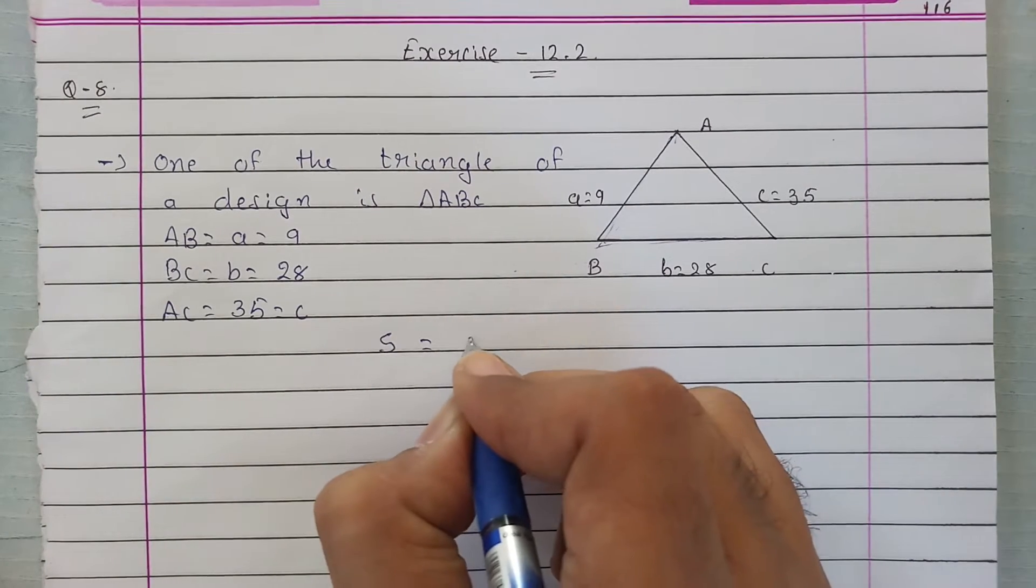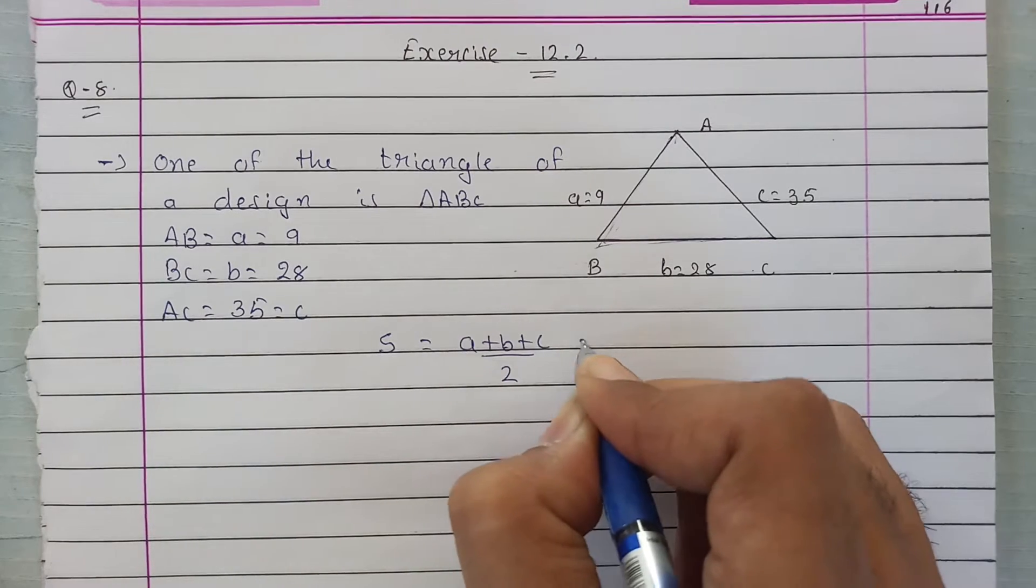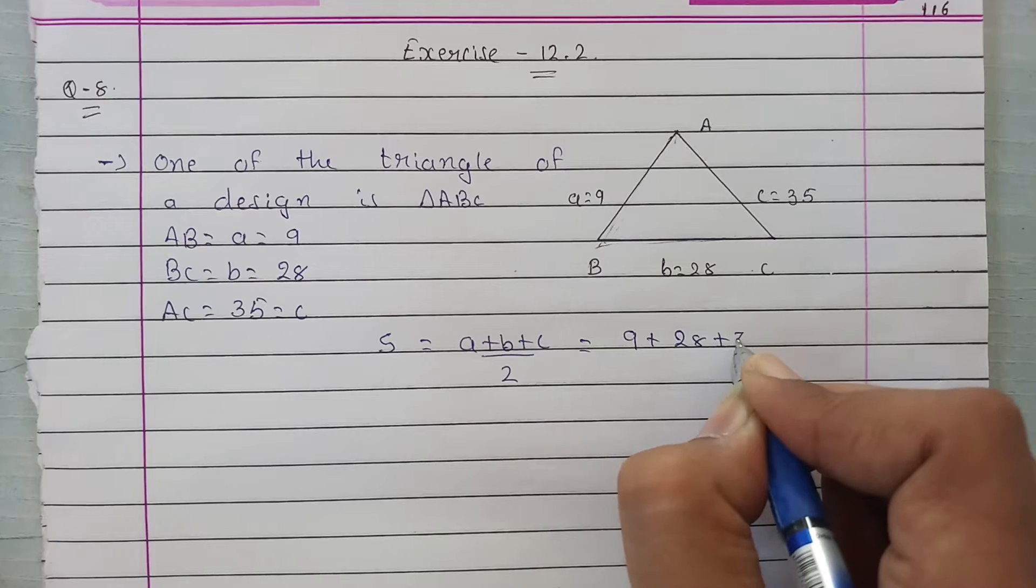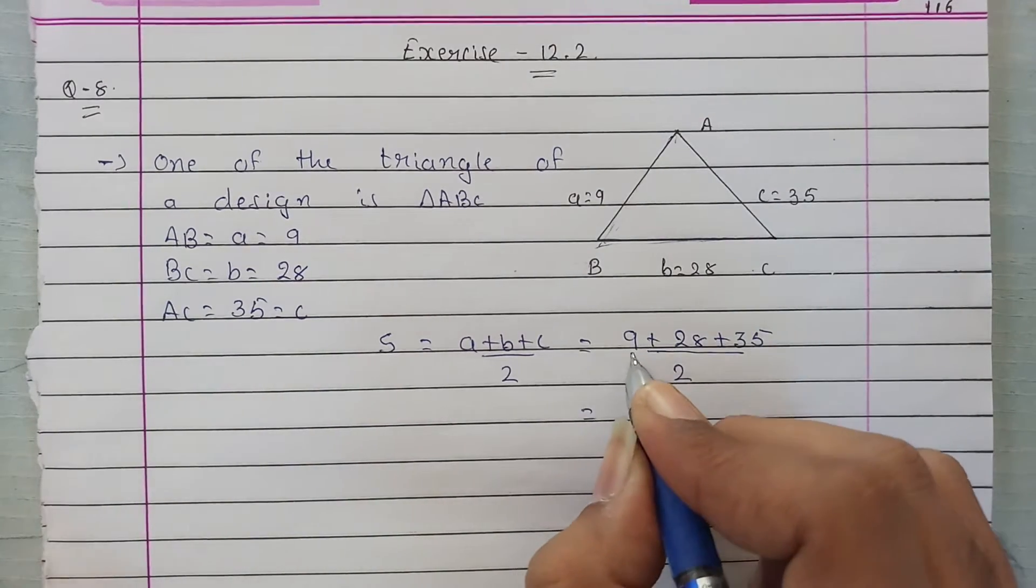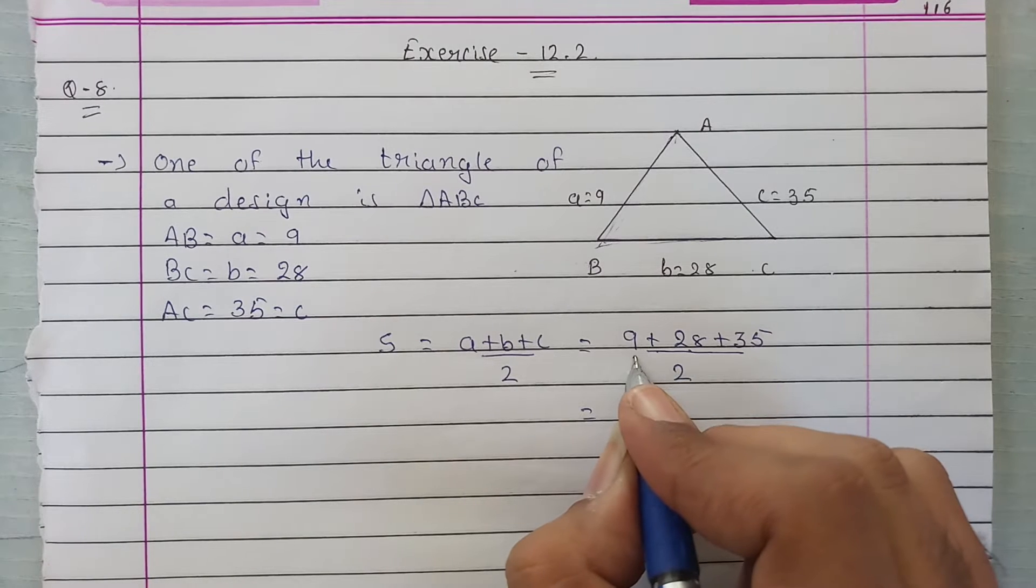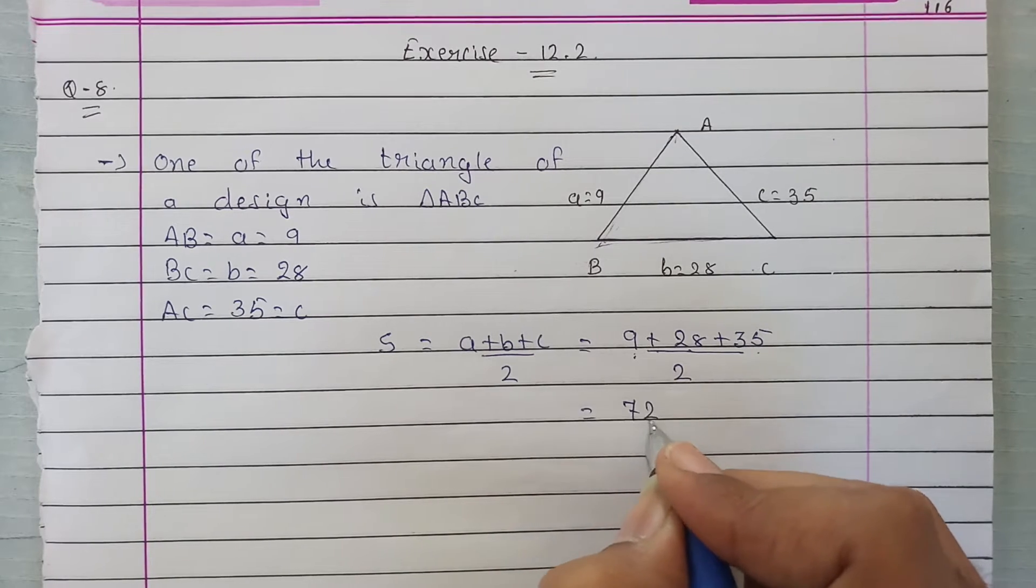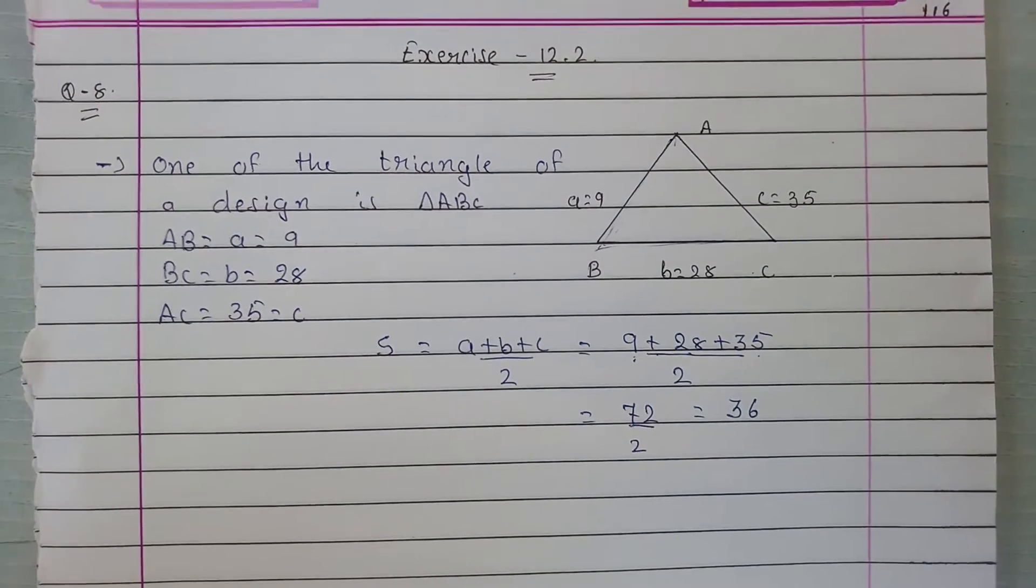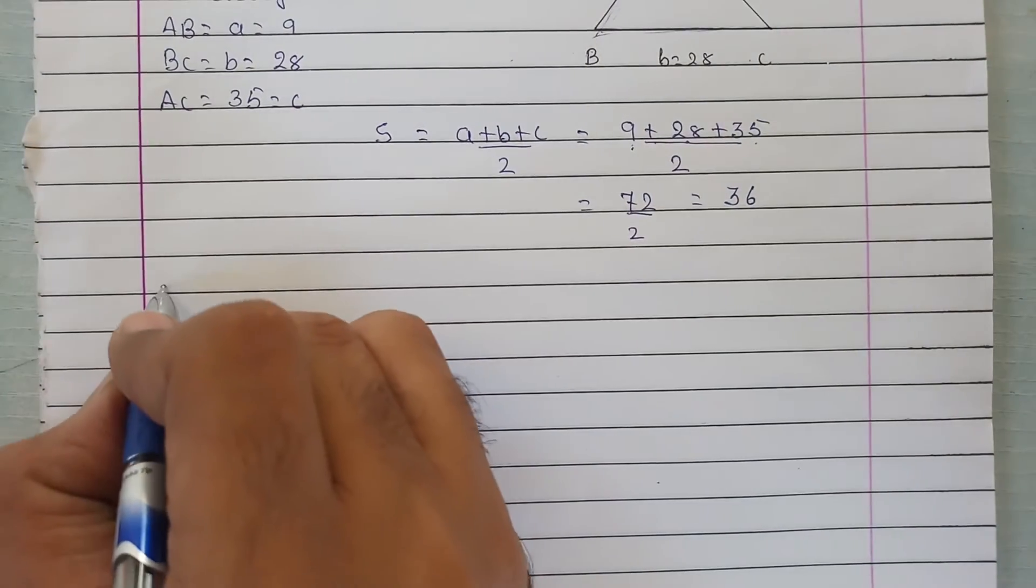S = (a + b + c) divided by 2. a is 9, b is 28, and c is 35, divided by 2. 28 plus 9 equals 37, 37 plus 35 equals 72, divided by 2, this will be 36.